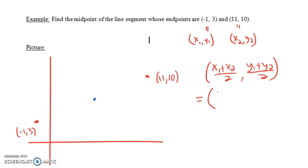And what that ends up being is (-1 + 11)/2—because x1 is -1 and x2 is 11—then we have (3 + 10)/2 for the y-coordinates. y1 is 3, y2 is 10.